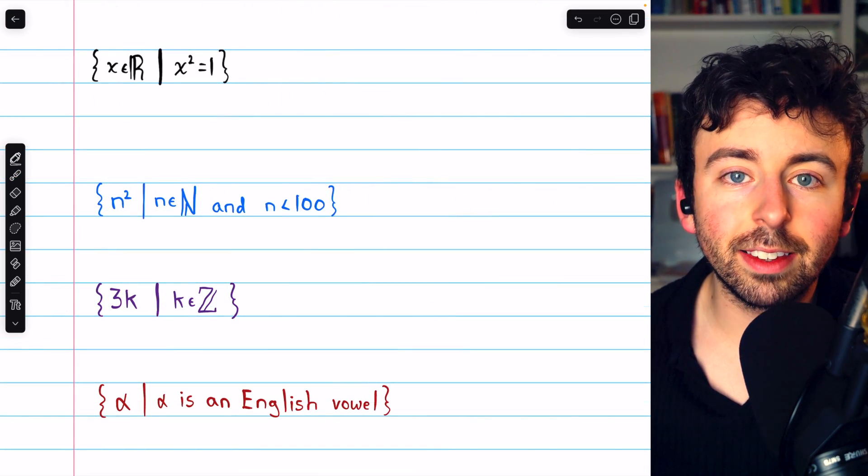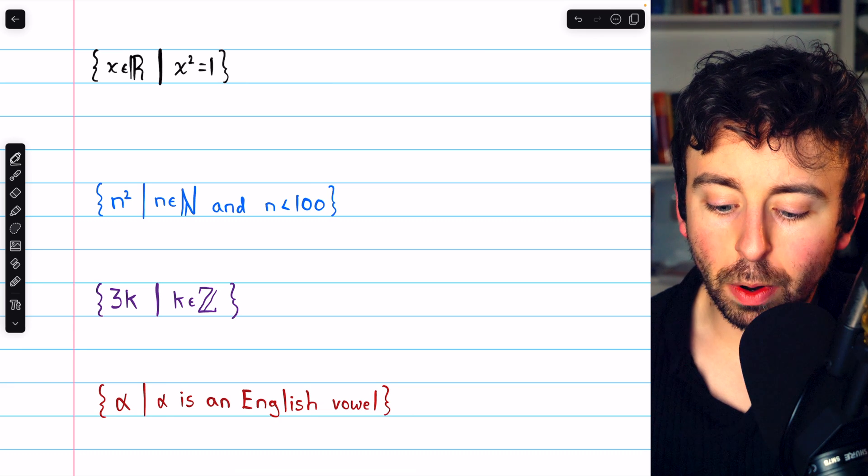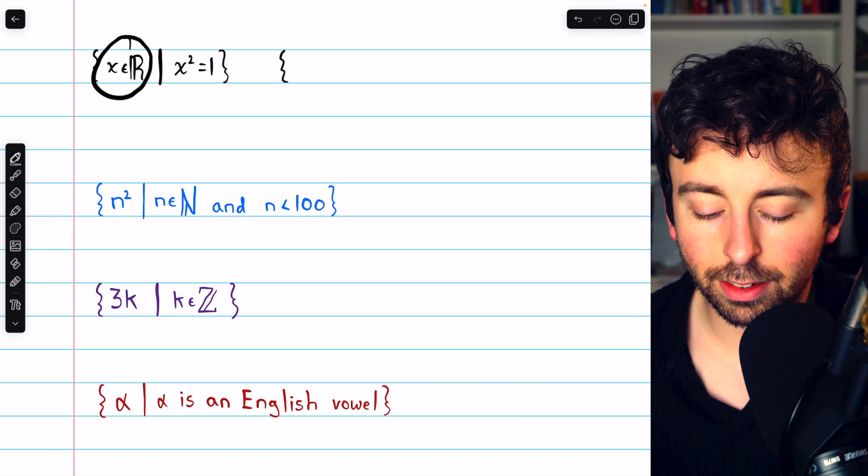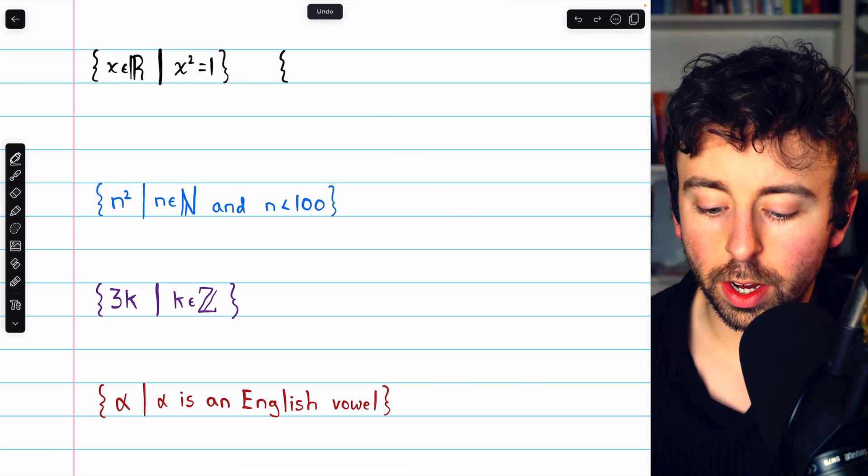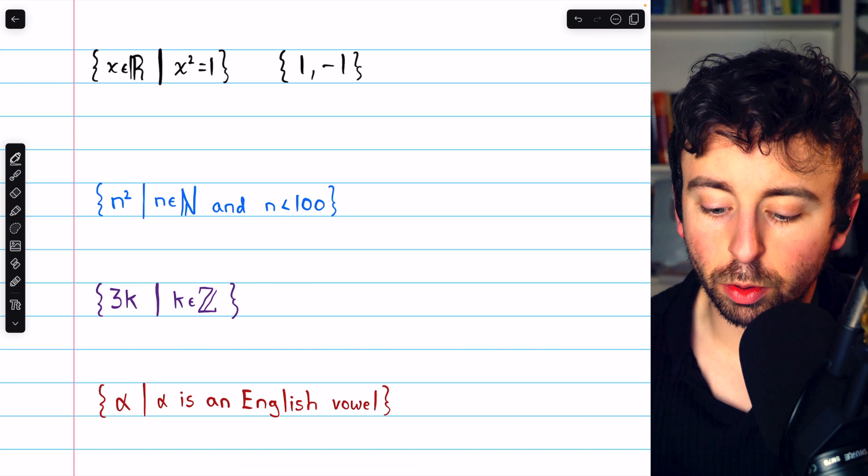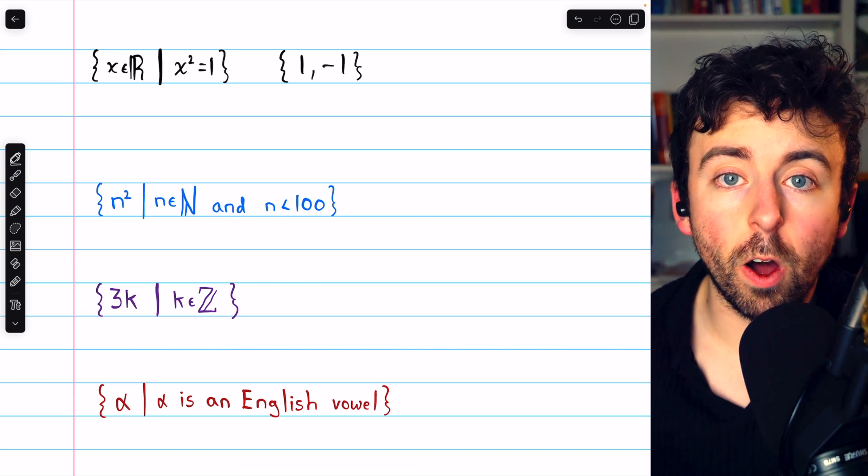Next, let's take a few sets in set builder notation and write them in roster notation. So this is the set containing all real numbers x such that x squared is 1. That's the set containing 1 and negative 1. Those are the only two elements satisfying all conditions.